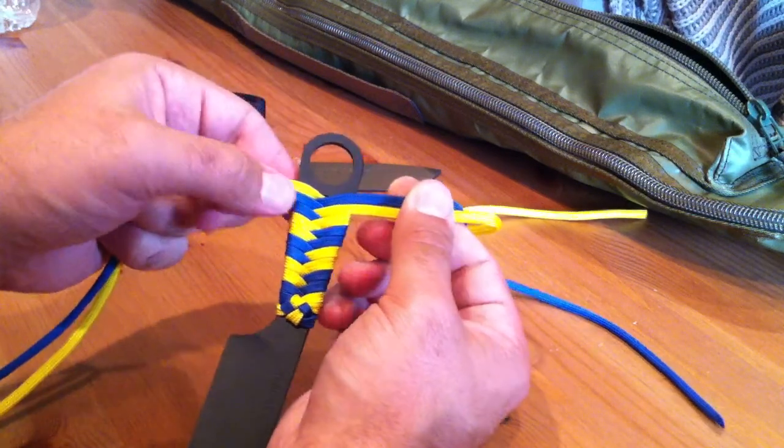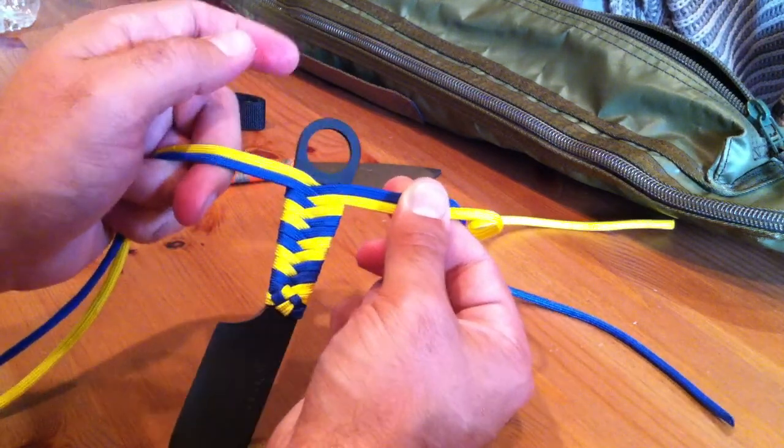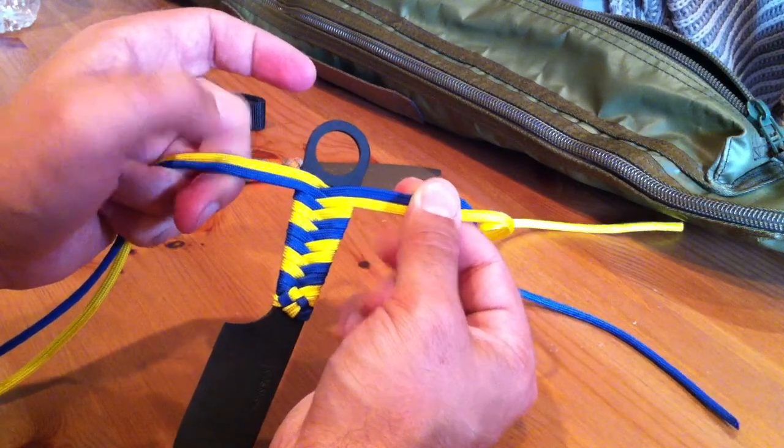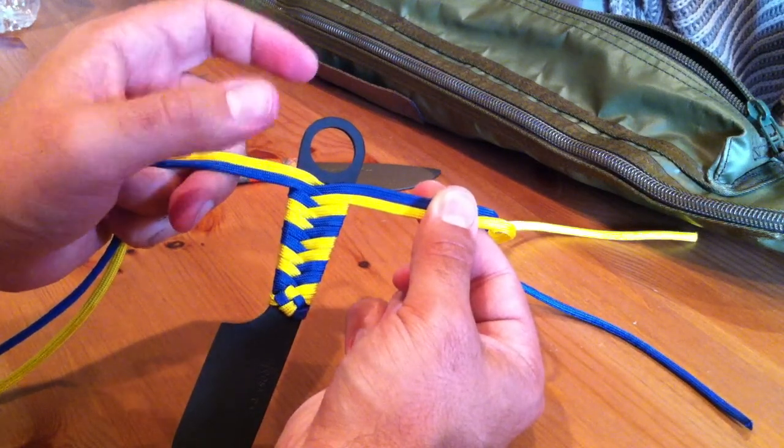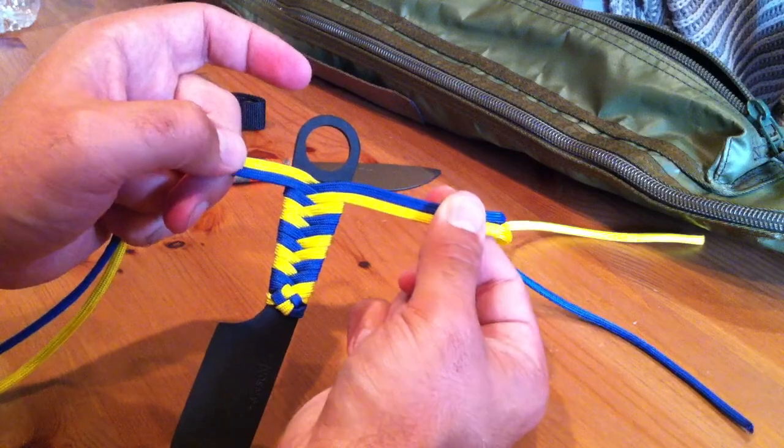and you have two cords per side, if you've done two different colors, you'll notice that you'll be in the same position you started in. You'll have one of each color per side.